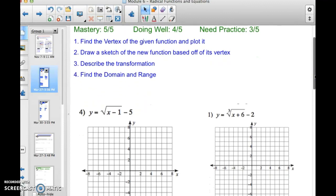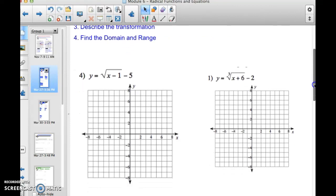So I've listed four steps in blue that we're going to take to do this. I'm going to initially find the vertex of the given function and plot it. Then I'm going to draw a sketch of the new function based off this vertex, describe the transformation based off the vertex, and then find the domain and range. If you notice, the vertex is very important in this process and that's why I'm going to find it first. Really all four of these things can be found based off that initial vertex.